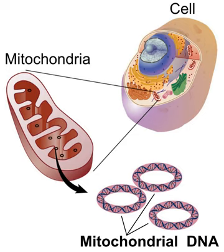Deletion breakpoints frequently occur within or near regions showing non-canonical conformations, namely hairpins, cruciforms, and cloverleaf-like elements. Moreover, there is data supporting the involvement of helix-distorting intrinsically curved regions and long G-tetrads in eliciting instability events. Higher breakpoint densities were consistently observed within GC-skewed regions and in the close vicinity of the degenerate sequence motif YMMMYNNMMHM. Recently it was found that all mitochondrial genomes sequenced so far contain many inverted repeats necessary for cruciform DNA formation, and these loci are particularly enriched in replication origin sites, D-loops, and stem loops.